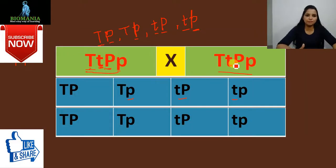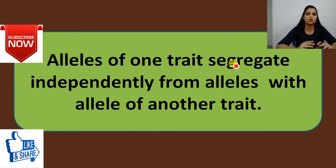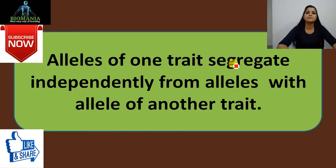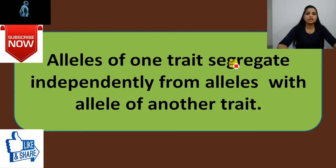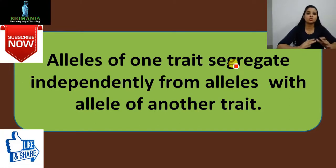So that is Mendel's law of independent assortment — the alleles are independently assorting with alleles of other traits. I think this law is now clear to you.